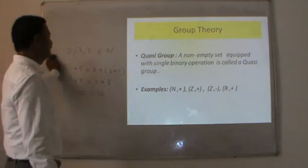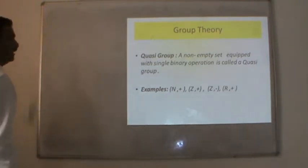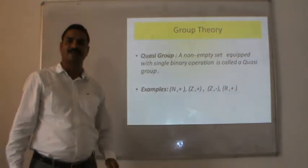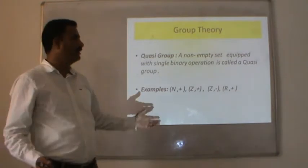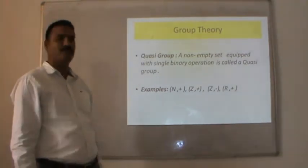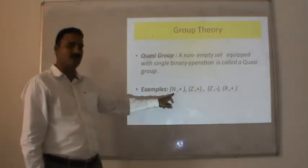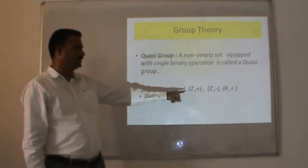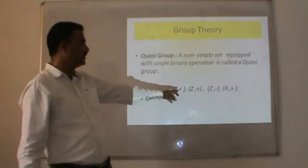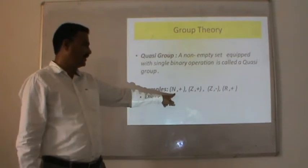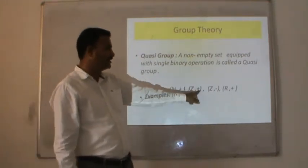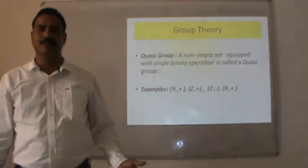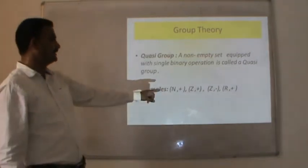Quasi-group: a non-empty set equipped with a single binary operation is called a quasi-group. There is a slight difference between a quasi-group and an algebraic structure — in algebraic structure your set may contain more than one binary operation, but a quasi-group has just one binary operation. Examples of quasi-groups are (N, +), (Z, +), (Z, −), and (R, +), since N, Z, and R are all non-empty sets and addition and subtraction are binary operations on them respectively.